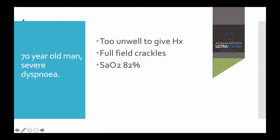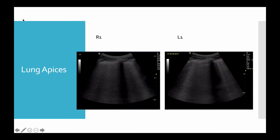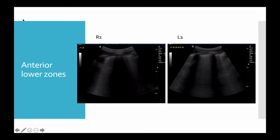Here is a 70-year-old man with severe dyspnea, too unwell to give a history, full field crackles, oxygen sats of 82%. Do we go down the GTN bypass path, or is this going to be a pneumonitis or something? Obviously at 2am in the morning you're very inclined to call it CCF. If we look at the apices right and left, you can see bilateral B-lines and you start to think, yeah, I was right.